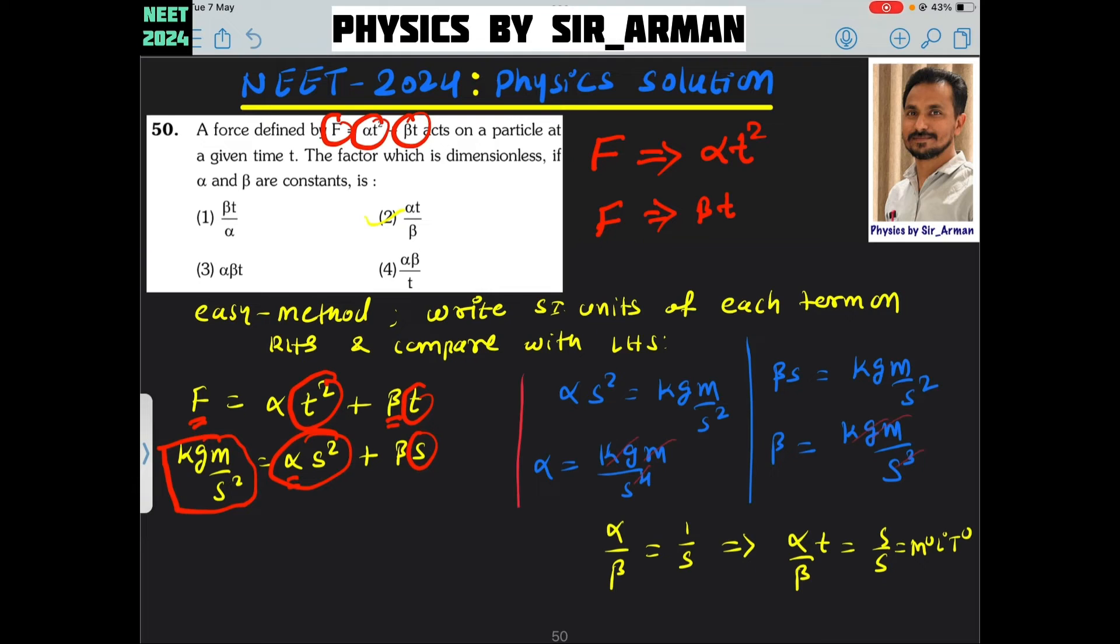Similarly, I am comparing this beta T or beta into S with this term. So again, beta into S equals kg meter per second square. So beta becomes kg meter by second cube.